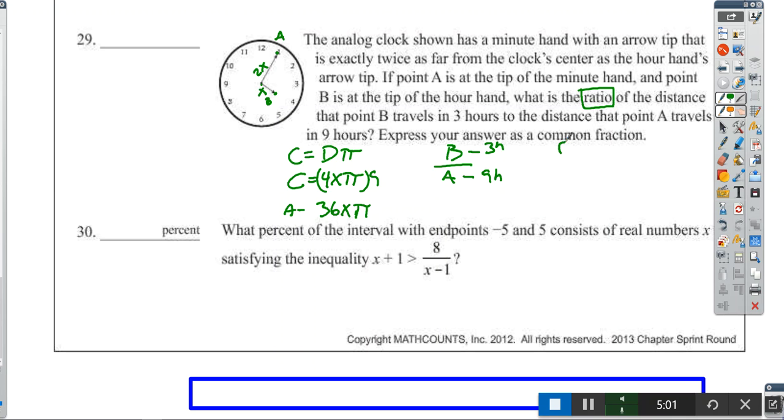For point B, it's only going to go for 3 hours. 3 hours, 1, 2, 3, is only a quarter. So we want the circumference, but only a quarter of it. The diameter is 2X because the radius is X. So we have 1/4 times 2X times pi, which is just 1/2 X times pi.